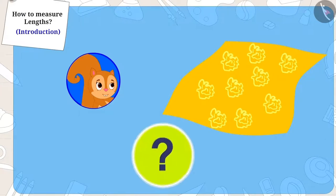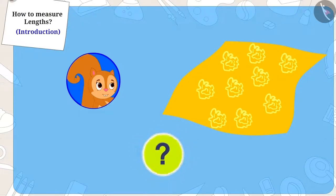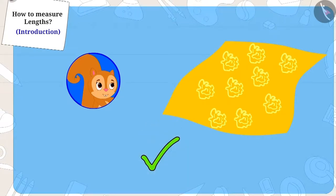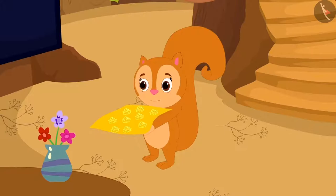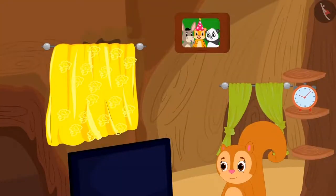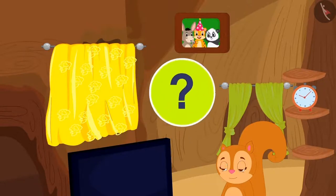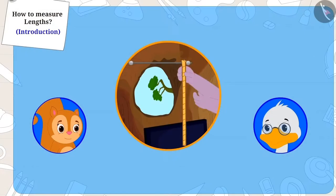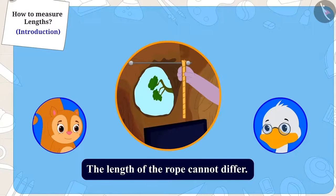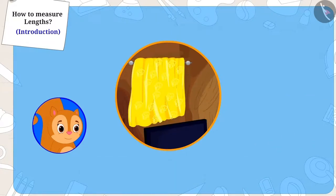Children, Appu had measured the window with the help of the rope, and because the length of the rope cannot differ, uncle's and Chanda's measurement became exactly the same. And Chanda found a curtain that was the right measurement for her window.